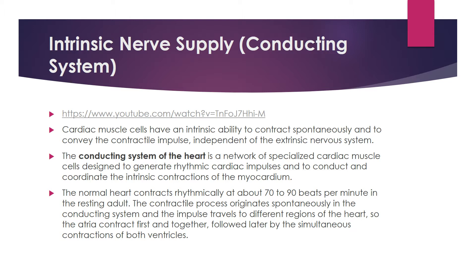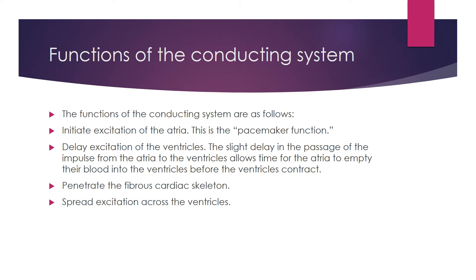The conducting system of the heart is a network of specialized cardiac muscle cells designed to generate the rhythmic cardiac impulse and to conduct and coordinate the intrinsic contractions of the myocardium. The normal heart contracts rhythmically at about 70 to 90 beats per minute in the resting adult. The contractile process originates spontaneously in the conducting system, so the atria contract first and together, followed by the simultaneous contraction of both ventricles.